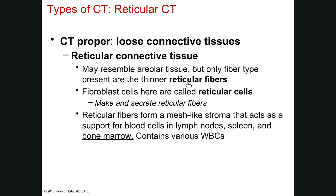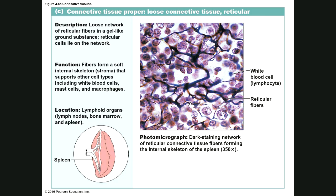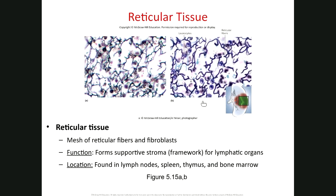Reticular connective tissue has reticular fibers — that's why it's called reticular. Instead of fibroblasts, we call the cells reticular cells, which make and secrete the reticular fibers. This tissue is highly associated with lymphoid organs and functions to form networks — a supportive, mesh-like stroma environment. Looking at pictures, you can see the short, branching reticular fibers form little compartments.